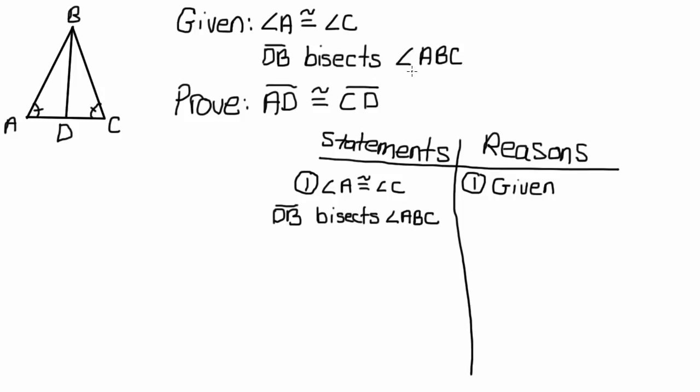And the fact that DB bisects angle ABC, though, there is something we can do with that. What we know is that if segment DB right here is coming into angle ABC right here, we know that if it's a bisector, that it's splitting the angle into two congruent angles. So that means we know this angle right here is congruent to this angle right here. And those two angles are angle ABD and angle CBD. And remember, to name an angle, just kind of trace around the triangle. So it starts here, A to B to D, C to B to D.